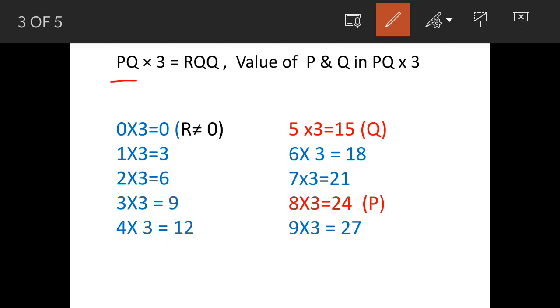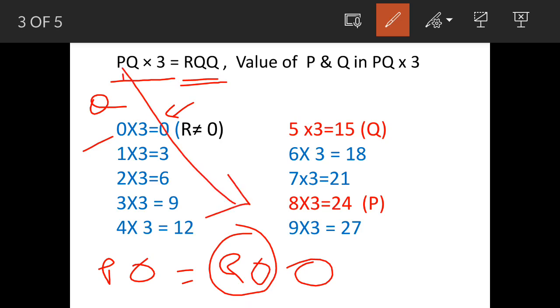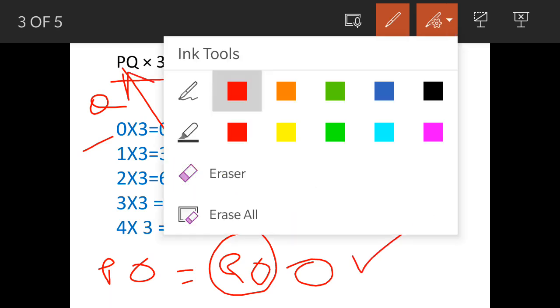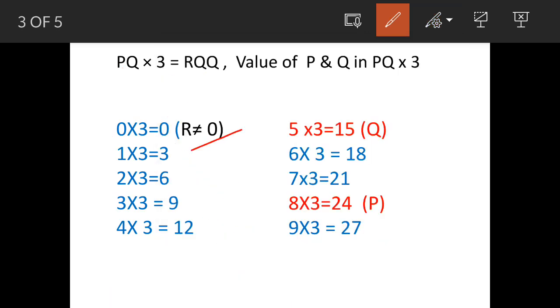Now here, PQ×3 = RQQ. That means PQ this is a two digit number. When it is getting multiplied by 3, we should get result as RQQ. So we will see. Now, let's see value of Q first. So Q = 0. So when Q = 0, unit place we are getting 0. That means P0 = R. Then we are getting 0 here when we are working out value of P. So this is meeting the requirement, but we cannot adopt this because value of R cannot be 0.